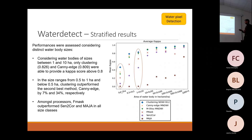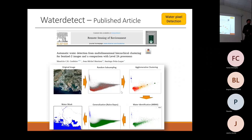Another finding is that among the processors, F-Mask outperformed Sentinel Core and Maya in all size classes.